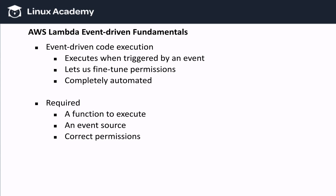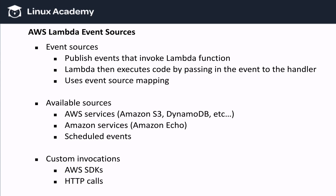Since we already covered handlers and context in the first lesson, I'm not going to cover it again in this lesson. So let's take a look at event sources. Event sources publish events that invoke the Lambda function. Once invoked, Lambda executes code by passing in the event itself to the handler, which we covered in the first lesson. How does Lambda keep track of all these event sources? By using event source mapping, and we'll get to that in more detail in a moment.